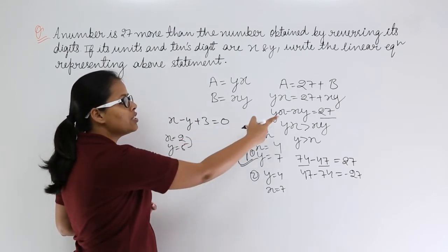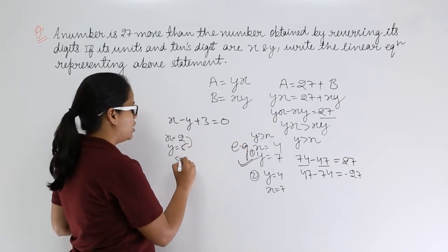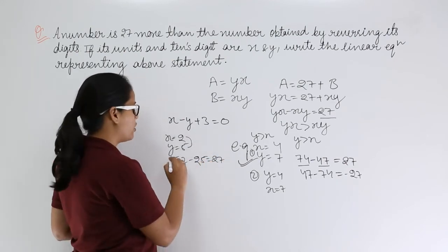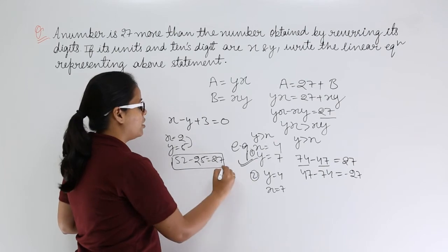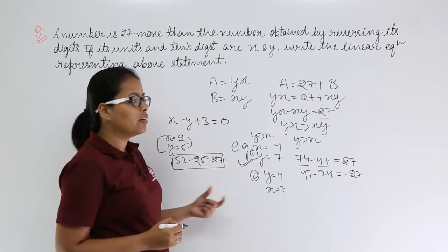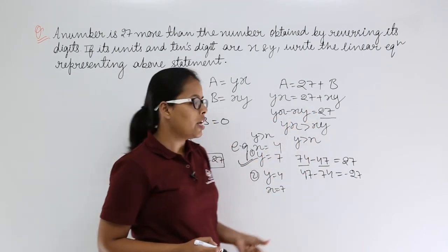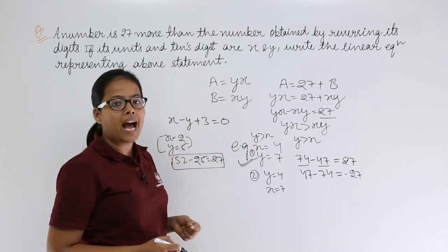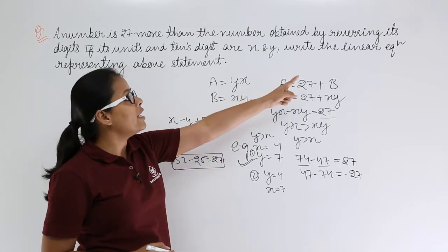Now let's put both of these values in this equation. This will become 52 minus 25, and this difference will always be 27. So again, these two values proving this equation.